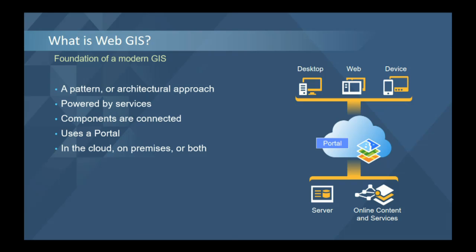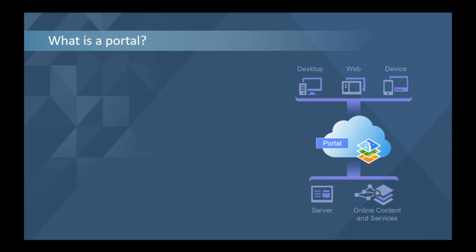Web GIS is really a pattern or architectural approach that's based on services. When we say services and Web GIS, we don't necessarily mean the World Wide Web — we mean any services. These services are just REST services that can come from your ArcGIS server or from the cloud or both. Most people live in a hybrid. The components of your Web GIS are connected by these services and it uses a portal, all of which can be implemented in the cloud, on-premises, or typically a combination of both.